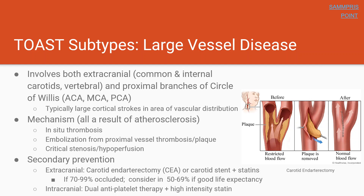Intracranial disease, on the other hand — referring to the proximal parts of the ACA, MCA, and PCA — is typically treated with dual antiplatelet therapy, usually aspirin and Plavix, for anywhere from 21 to 90 days. The exact timing and indication can get convoluted, but it stems from two major stroke articles, SAMPRAS and POINT, which are hyperlinked on the slide.